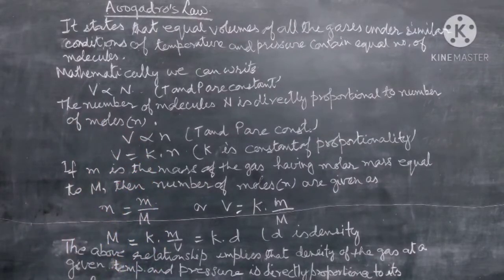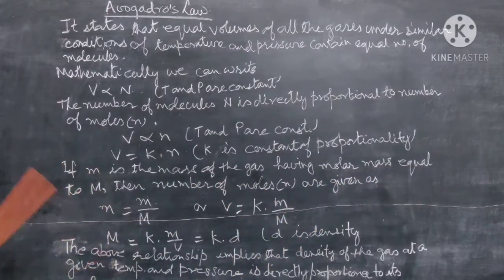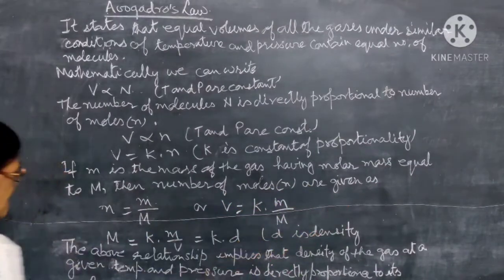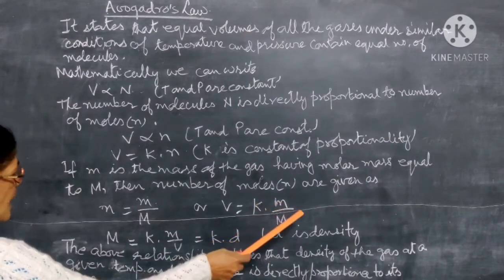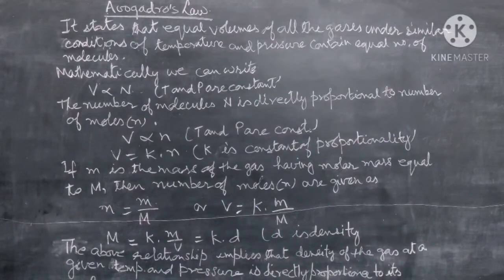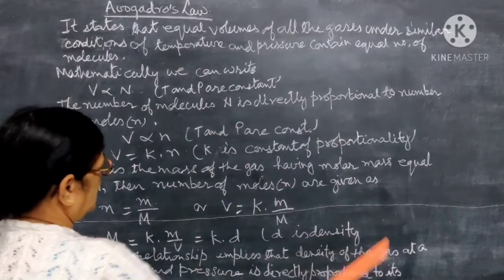We can use the mass and molar mass of the gas because the number of moles n is related to the mass of the substance divided by molar mass. If small m is the mass of the gas and capital M is the molar mass, then the number of moles n equals small m upon capital M. So we can write V is equal to K into m upon M. By rearranging, capital M equals K into m upon V, and since m upon V is density, we can write M equals K into D, where D is the density of the gas.